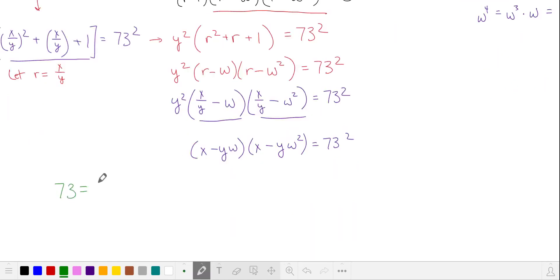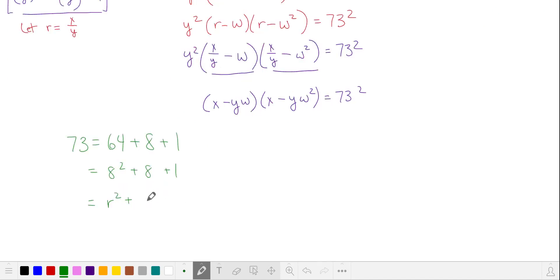Another handy thing to notice is that 73 is equal to 64 plus 8 plus 1. This is also equal to r² plus r plus 1 when r is equal to 8, which again factors to r minus ω and r minus ω². When r equals 8, that's 8 minus ω and 8 minus ω².